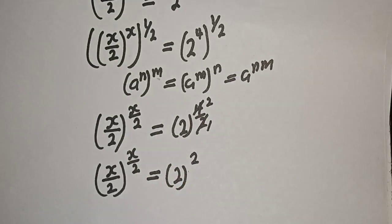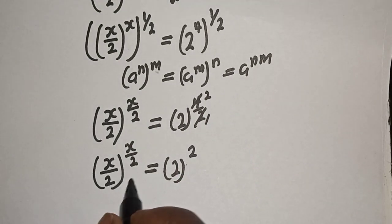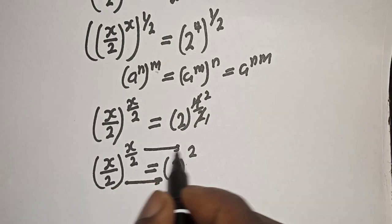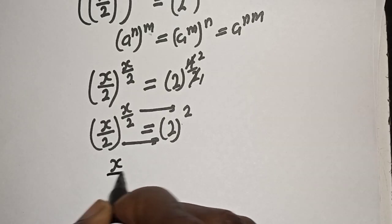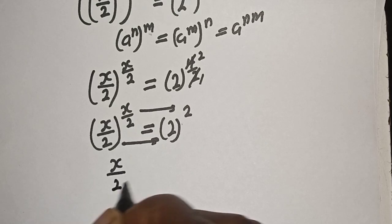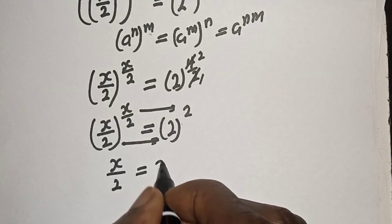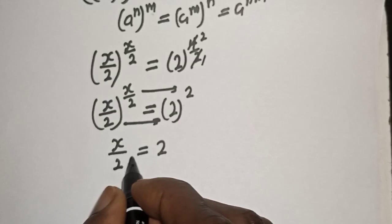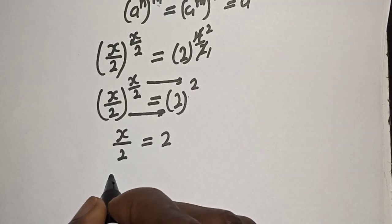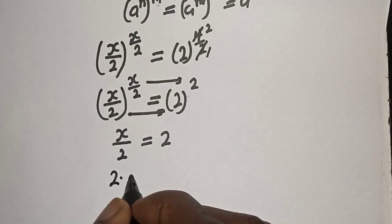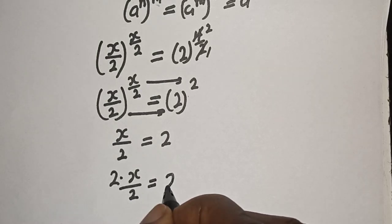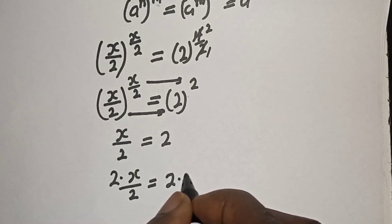Now comparing both sides: the base on the left equals the base on the right, and the exponent equals the exponent. Therefore, s over 2 is equal to 2.